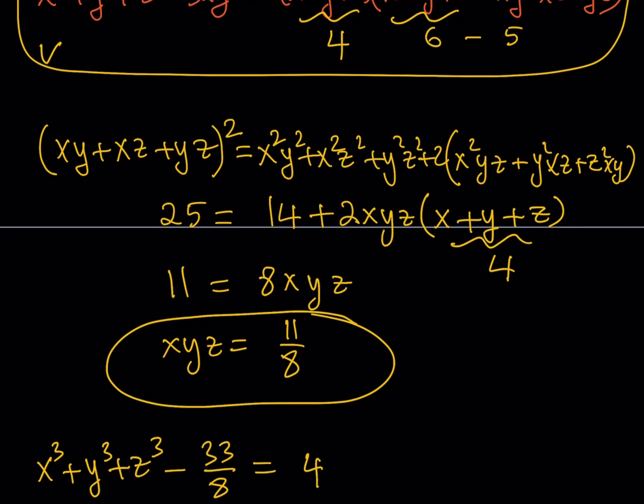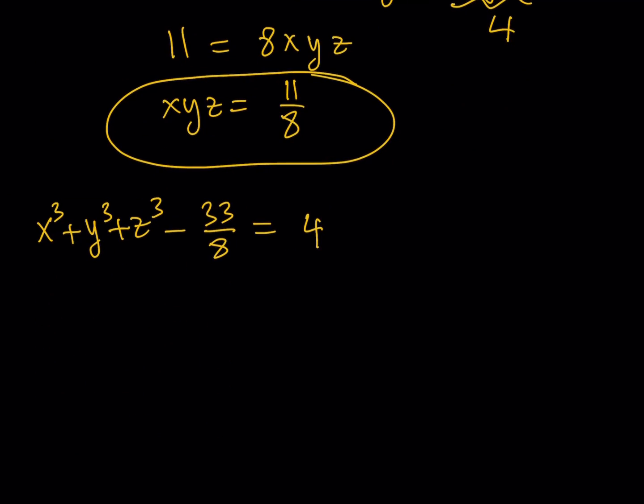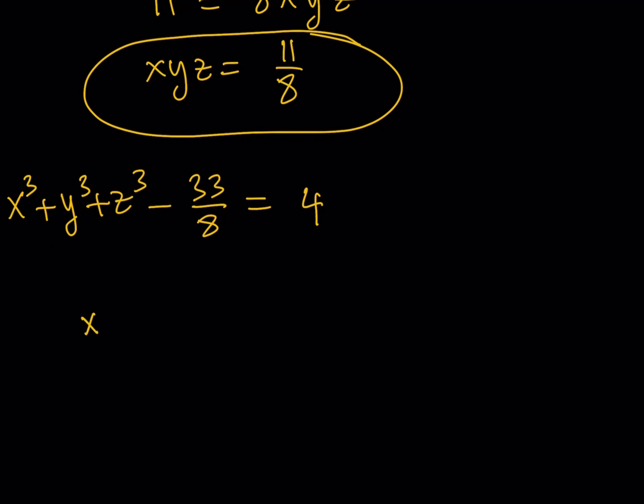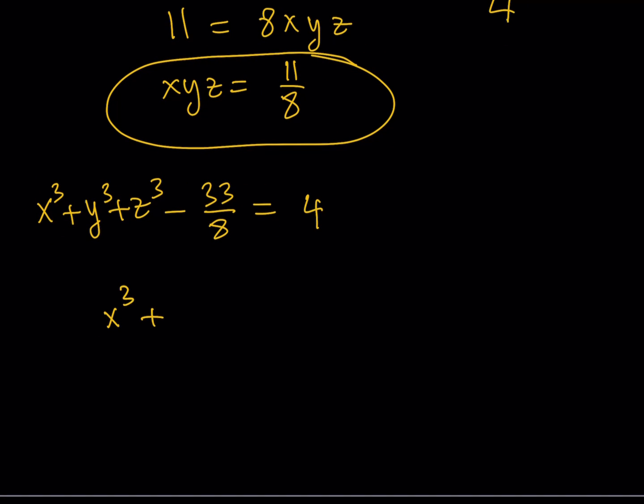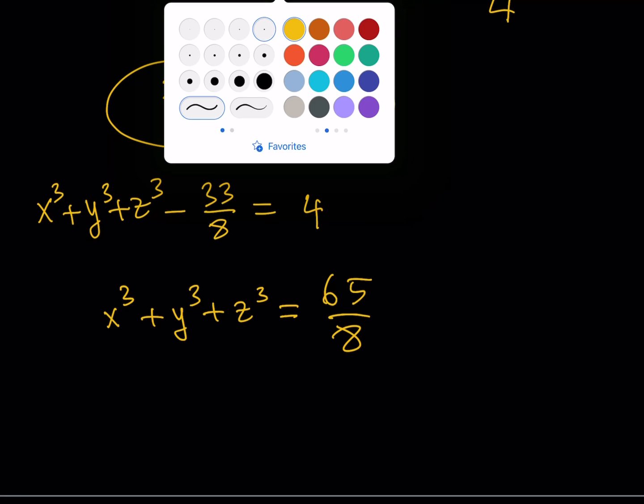And what does this mean? It means that we are almost done. So now we have x cubed plus y cubed plus z cubed is equal to 4 plus 33 eighths, and if you make a common denominator that should be 32 plus 33 which is 65 over 8. And that brings us to the end of this video.